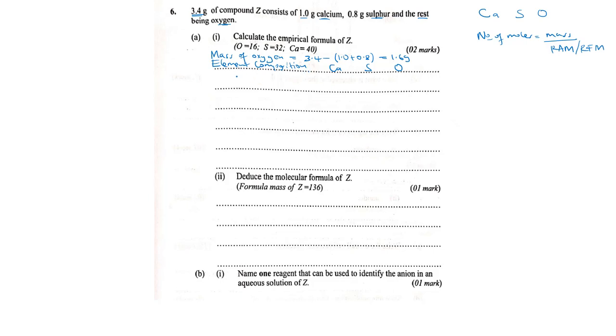We will now note down the element composition to have organized work. The elements are calcium, sulfur, and oxygen. The first thing we do is find the number of moles. We know that number of moles equals the mass of a substance divided by the relative atomic mass (RAM) for atoms. The masses are: calcium = 1.0g, sulfur = 0.8g, and oxygen = 1.6g.